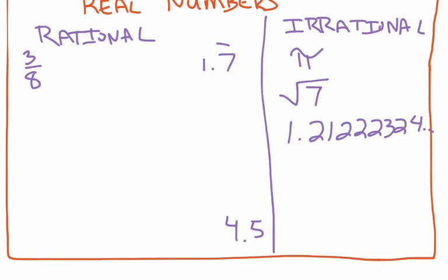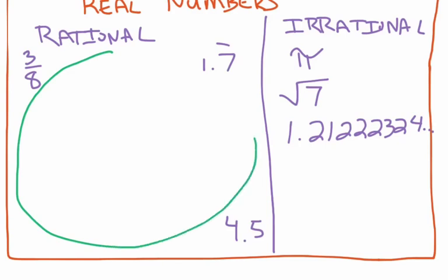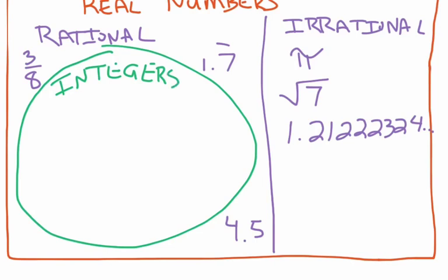Within the Venn diagram, inside rational numbers, I'm going to put a big circle for integers. Integers can be described as all of the counting numbers and their opposites, along with the number zero. Some examples of integers might be negative 2, 0, and 1.